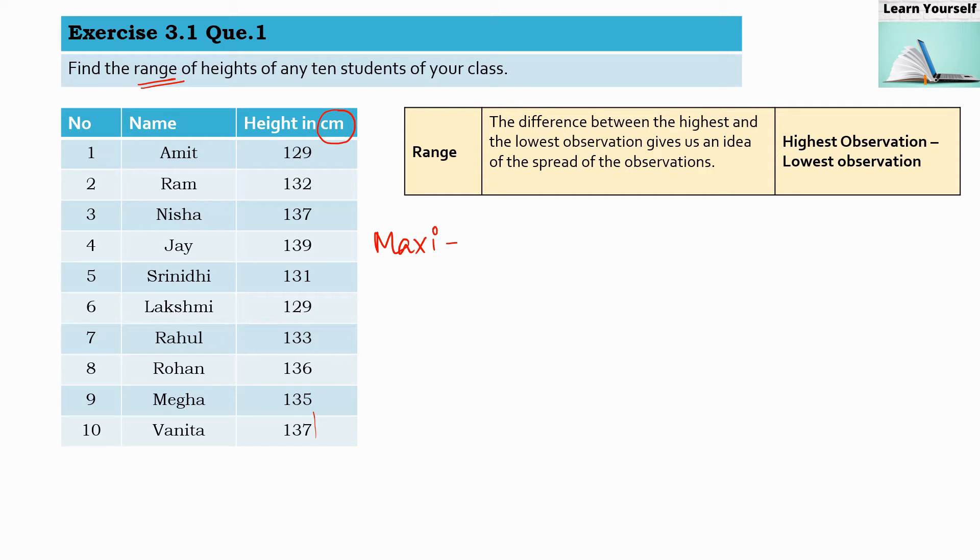Among this data, so it is 129. This is the lowest, I guess. And in this, again, one more observation is of 129. So 129 is the lowest observation. This much centimeter height is the lowest among this data.